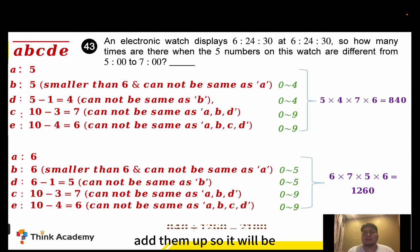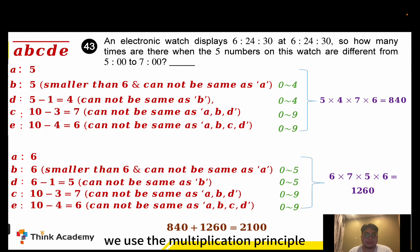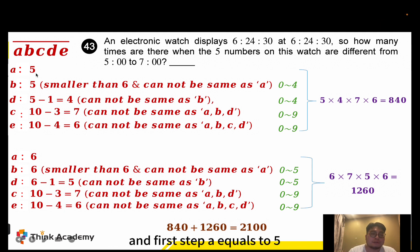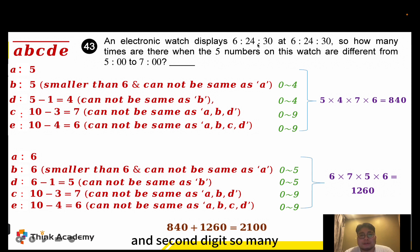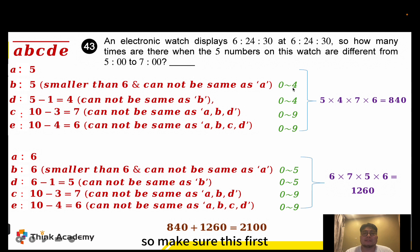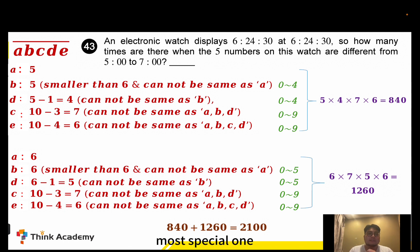Adding both cases together: 840 plus 1260 equals 2100. To summarize, we used the multiplication principle, starting from the most restricted digits first — the hour digit, then the tens digits of minutes and seconds which cannot be six — and then determined the remaining digits.